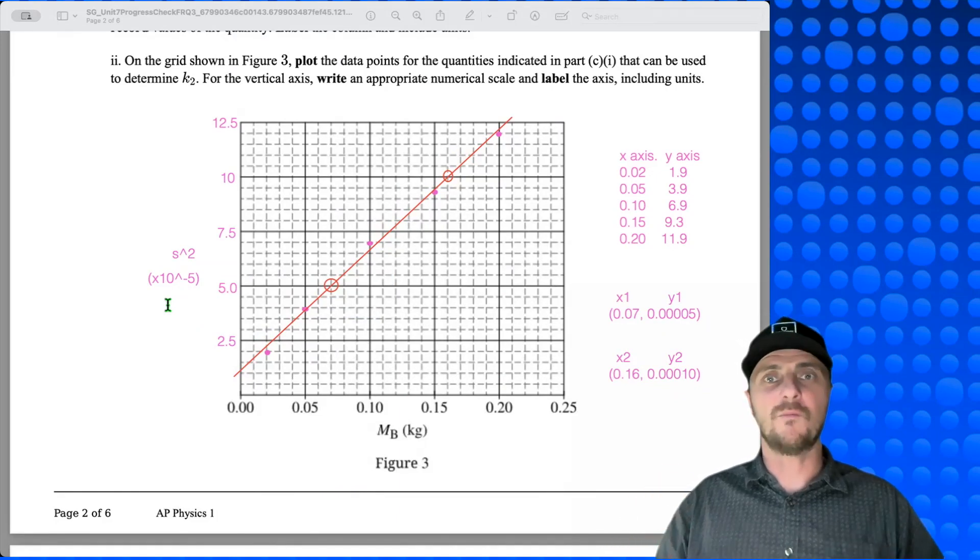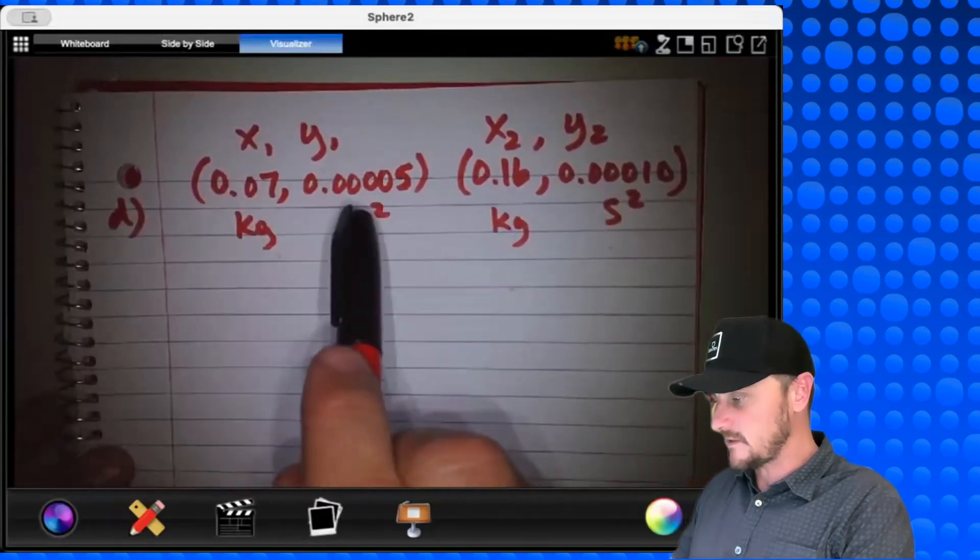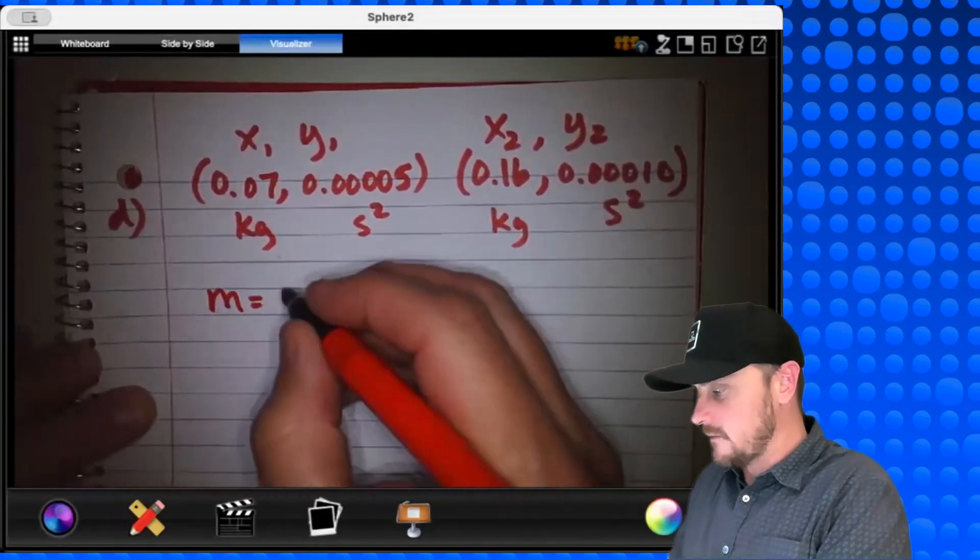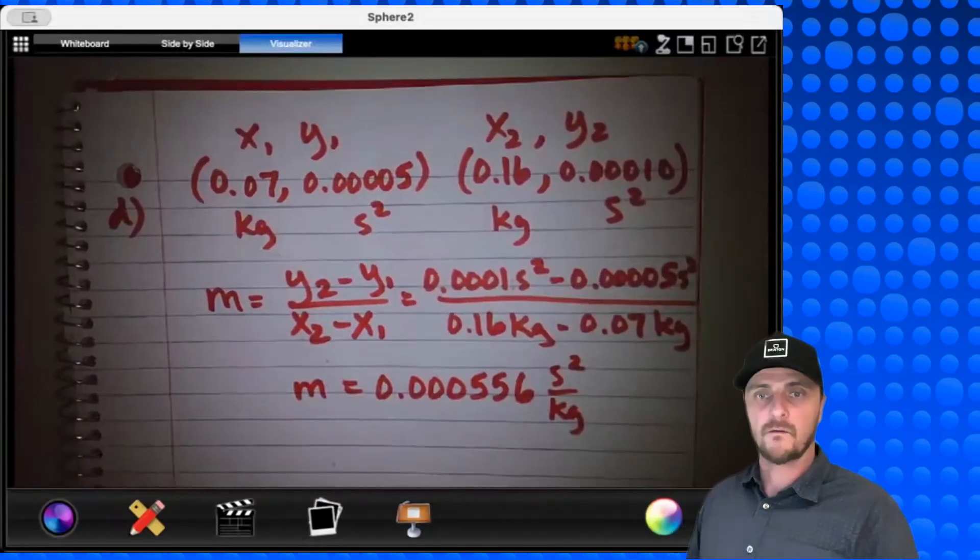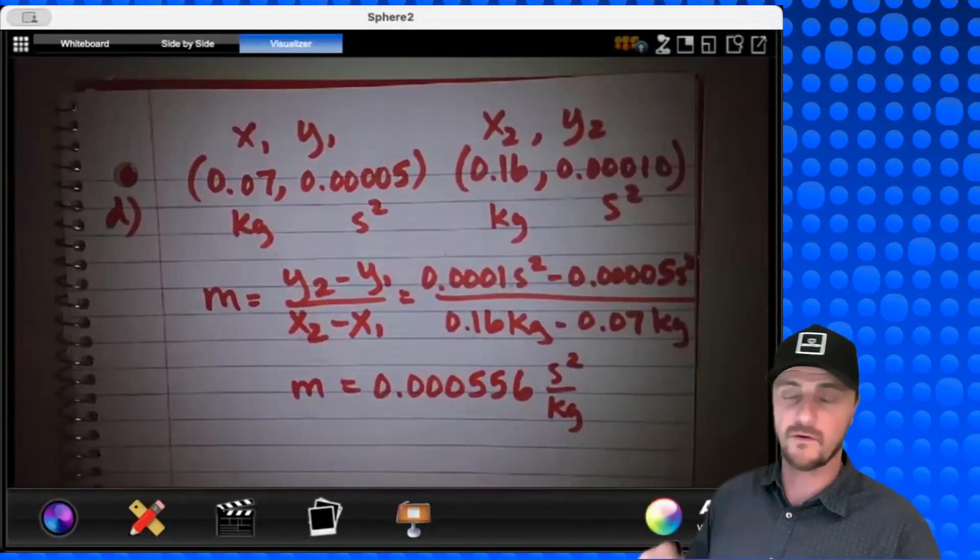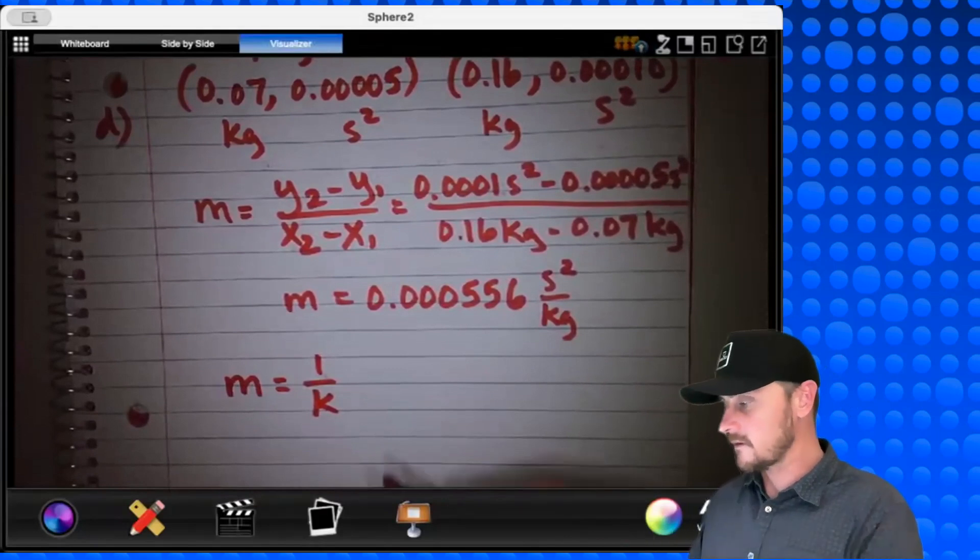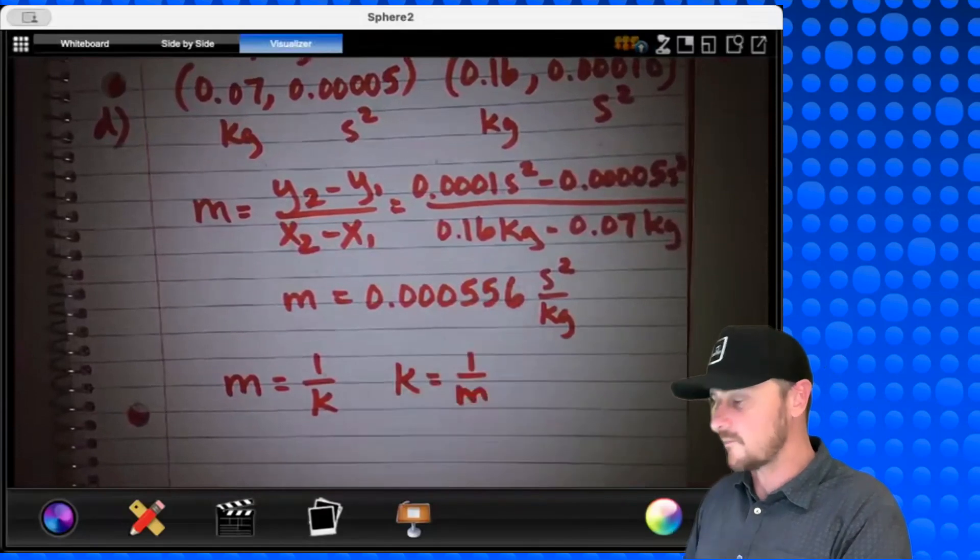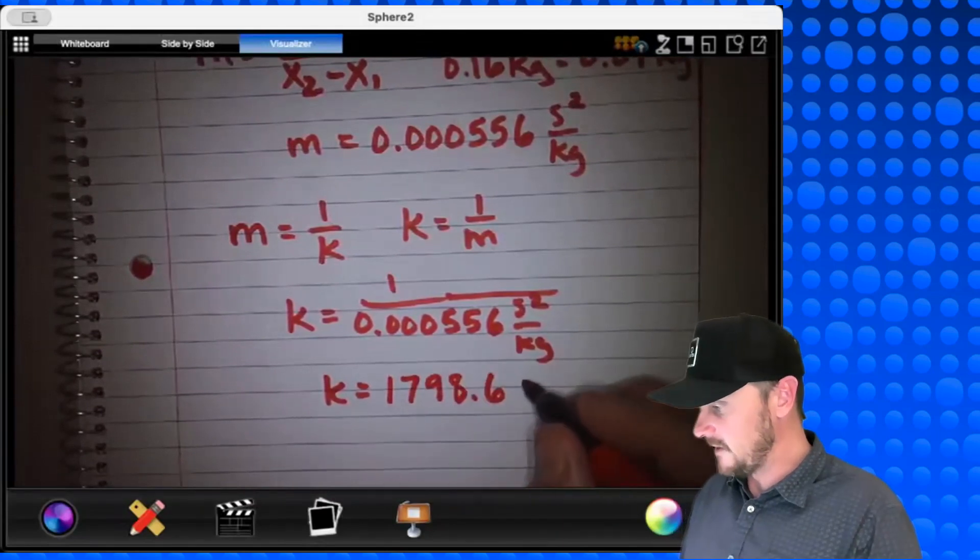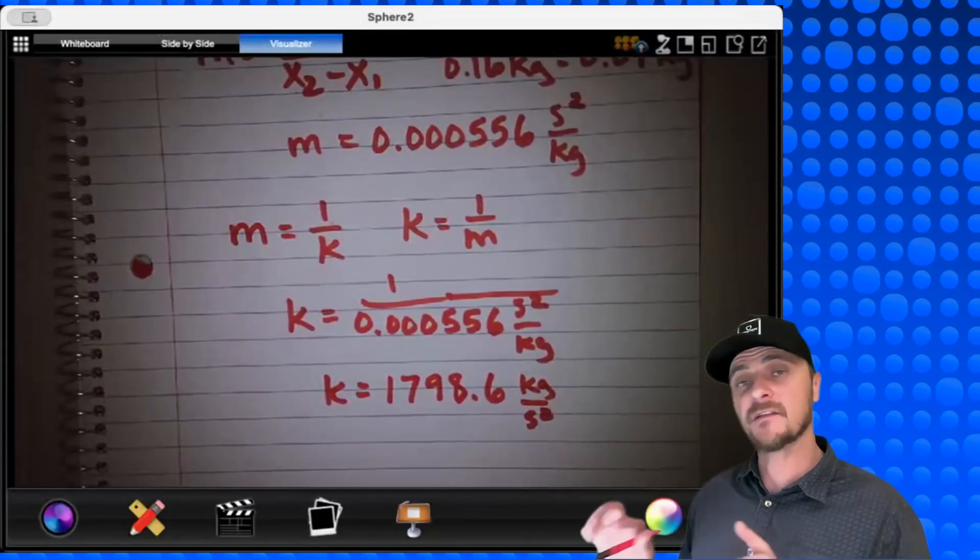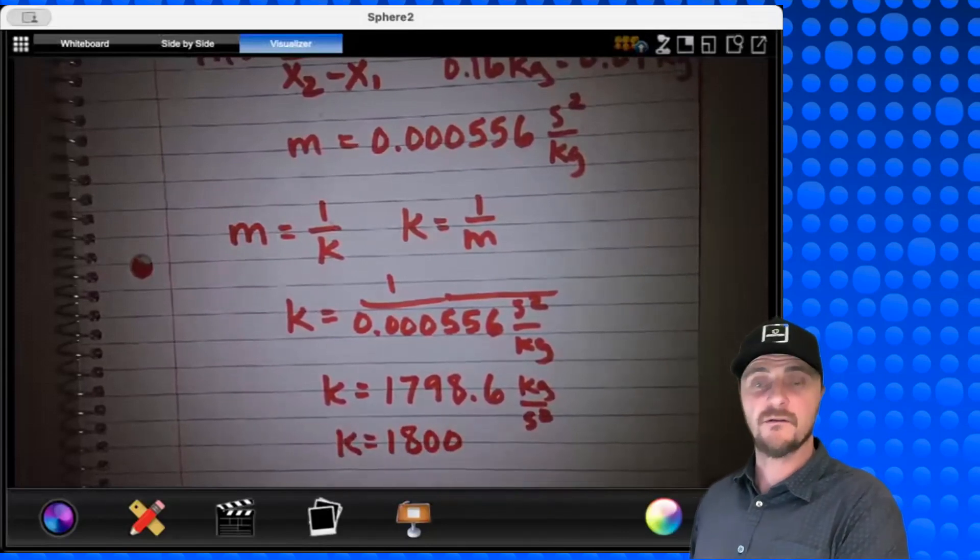Let's go to part D, calculate the slope, and then get the spring constant from that slope. Part D, time to find the slope. We have our ordered pairs. This has a unit of kilograms, this has a unit of second squared. Slope m equals y2 minus y1 over x2 minus x1. And to save some time, I'm just going to do all the calculations and then show you the work. There's our slope, 0.000556 second squared per kilogram, and remember, slope in this case was equal to 1 over k. That's what we determined earlier. So therefore, k, the spring constant, would equal 1 over that slope right there. Let's plug it in, get our answer, and be done. And I get an answer of 1798.6, and this would be kilograms over second squared. You could certainly just round it up and say 1800, and that would be fine also. That's our answer.